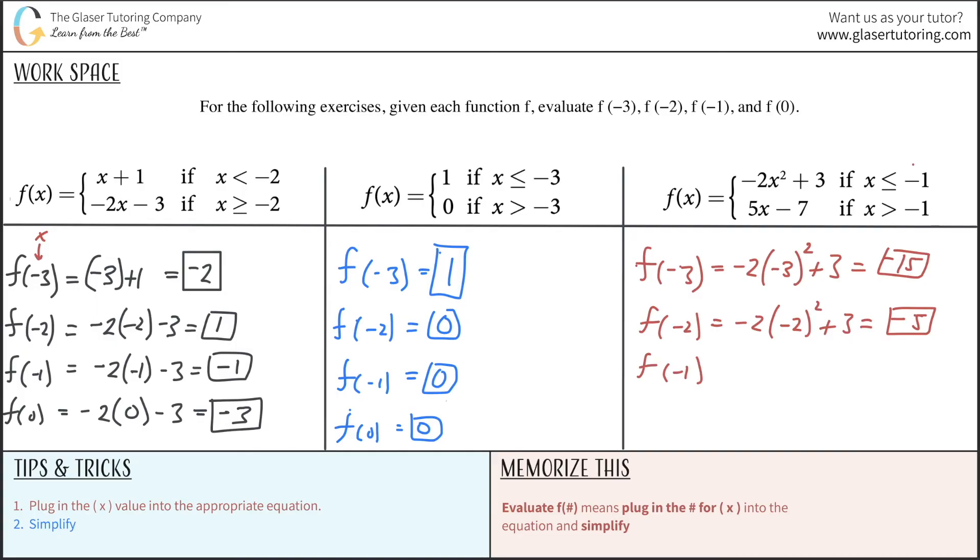How about now f of negative 1? So negative 1 is equal to negative 1. So we're still using the top function. So this is negative 2 times negative 1 squared plus 3. Negative 1 times negative 1 is positive 1. Positive 1 times negative 2 is negative 2. And then negative 2 plus a 3 is going to be a positive 1. There we go.